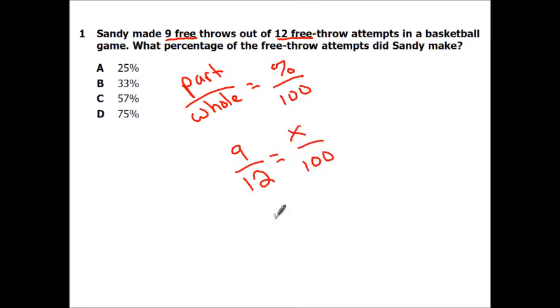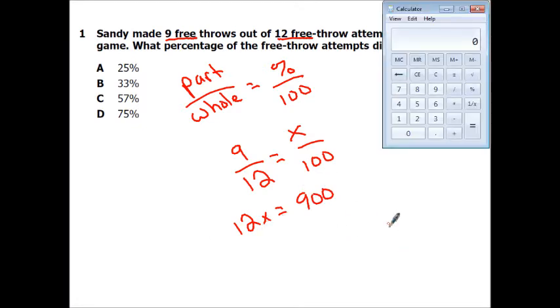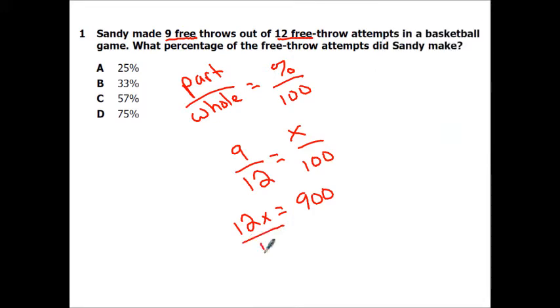When we solve these, we just cross multiply. So 12x equals 900, and then we need to divide by 12. So 900 divided by 12 equals 75. So if we divided both sides by 12, x would equal 75. And since it was in the percent spot, it's 75%.